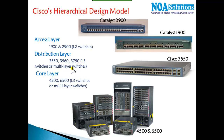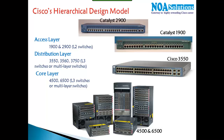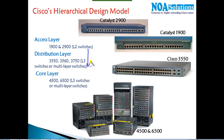Cisco designs switches in a three-level hierarchy. At the access level we have layer 2 switches — typically the 1900 and 2900 series — which connect to computers, identify devices by MAC address, and forward traffic based on MAC address. These are used at end locations connecting to end devices. At the next level are distribution switches, such as the 3550, 3560, and 3750 series, which are higher-speed, higher-port-count switches called layer 3 or multi-layer switches.